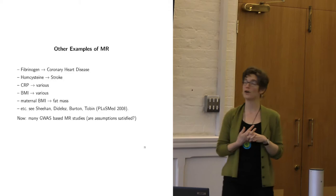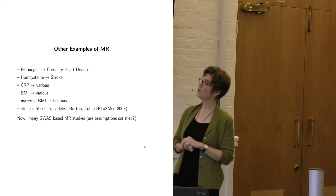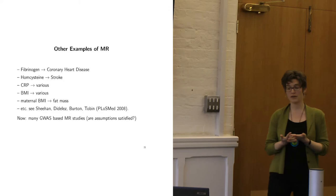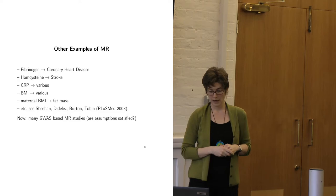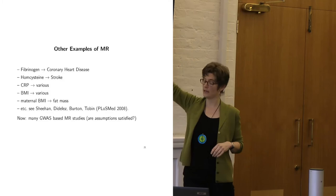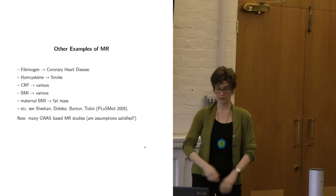Other examples of Mendelian randomization: it has been used in many contexts beyond the alcohol example. People have found genetic variants for fibrinogen, homocysteine, CRP, and body mass index. There is a lot of work on body mass index, where people are now using multiple instruments — lots of genetic variants that predict BMI. We've given an overview, though that's already a bit old; there are many newer Mendelian randomization studies now.